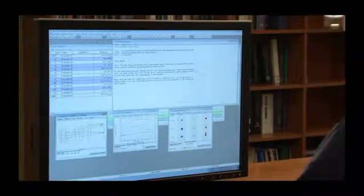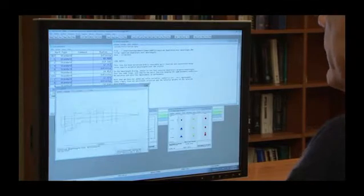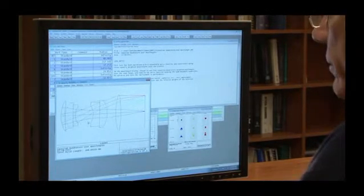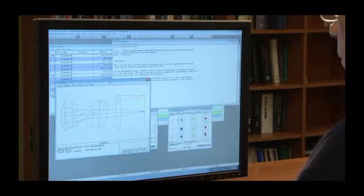So here's our first example. It's a simple imaging system, a double gauss type of lens based on the sample double gauss lens that we've been distributing with ZMAX for a long time.